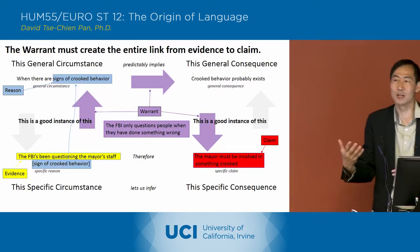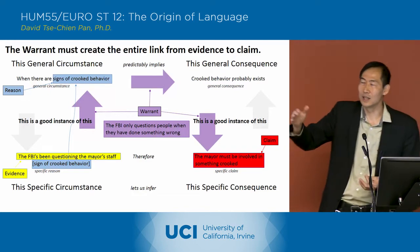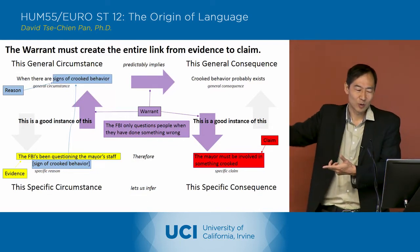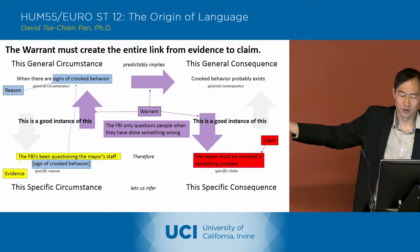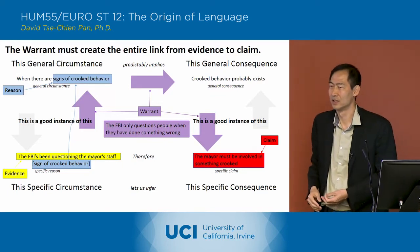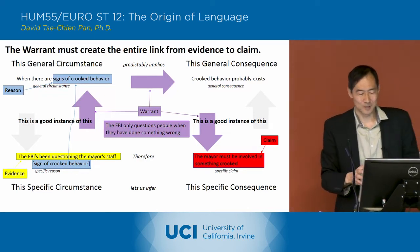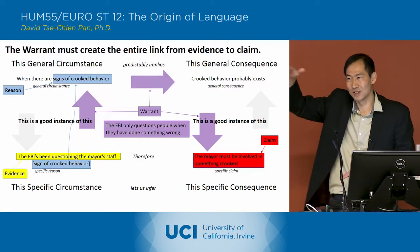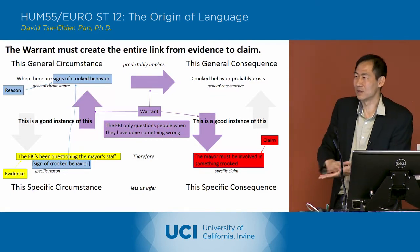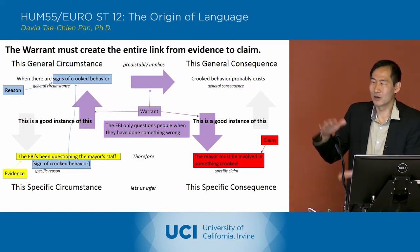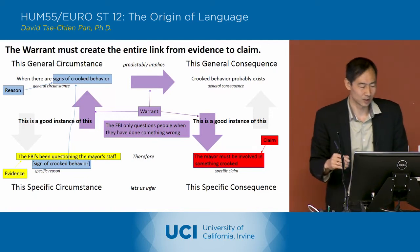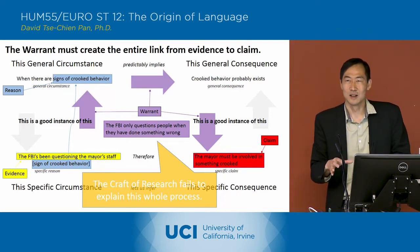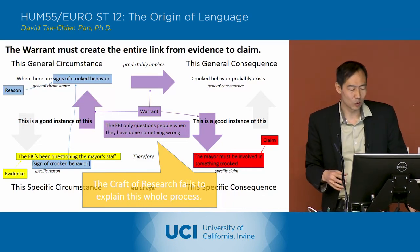I'm proposing as that warrant: the FBI only questions people when those people have done something wrong. That's what I'm suggesting is really the warrant here, because that's the idea that's going to link it all the way around. The FBI questioning is a sign of crooked behavior, and that sign can be linked up to the people they're questioning. Without this, you've got the general rule floating up here and the specific statement down here with no necessary relationship between the two. When the Craft of Research fails to explain this process, there's a missing piece in the way the warrant is being understood.